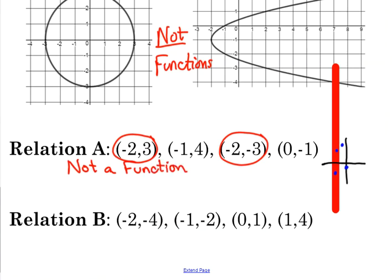Relation B, when we look at that list, we've got (-2, -4), (-1, -2), (0, 1), and (1, 4). I don't see any repeated x values. Negative 2, negative 1, 0, and 1. So nothing repeated, so this one is a function.